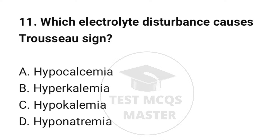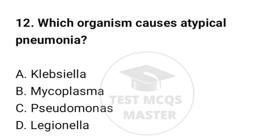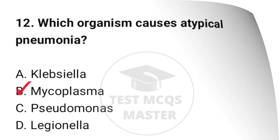Question number 11: Which electrolyte disturbance causes tetany? The correct option is A: Hypocalcemia. Question number 12: Which organism causes atypical pneumonia? The correct option is B: Mycoplasma.